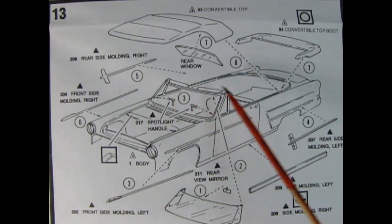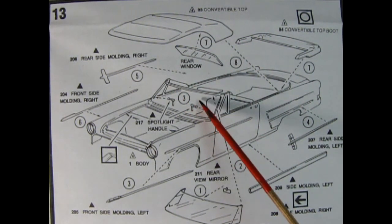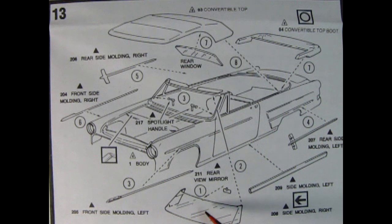You got these nice little sun visors. There's a rear view mirror going in and then we've also got our windshield. These are spotlight handles that will glue on the side so there's spotlights on this car that's cool. And then we've got our side moldings left and right which will glue on there as well.